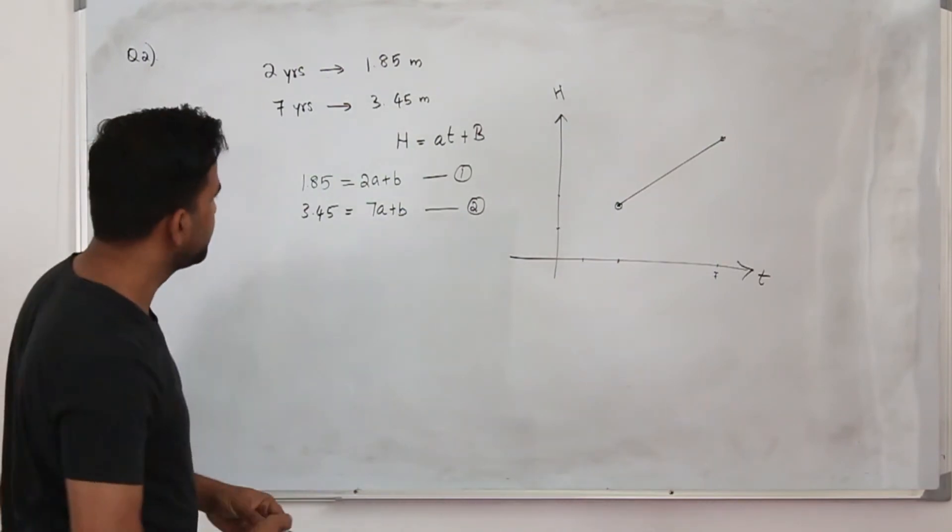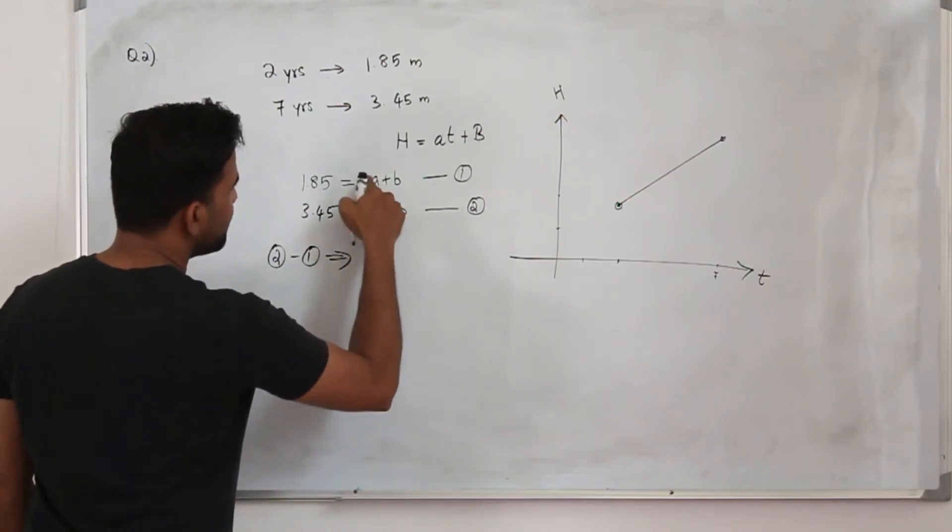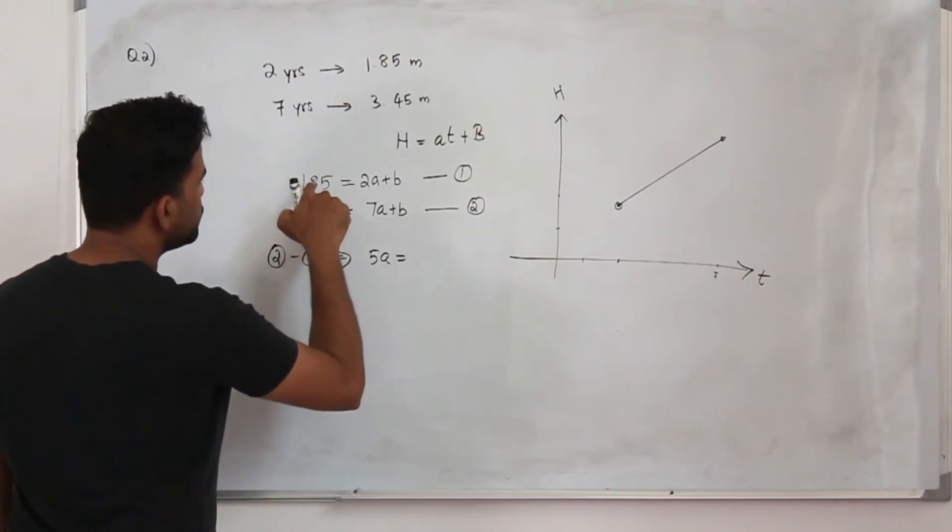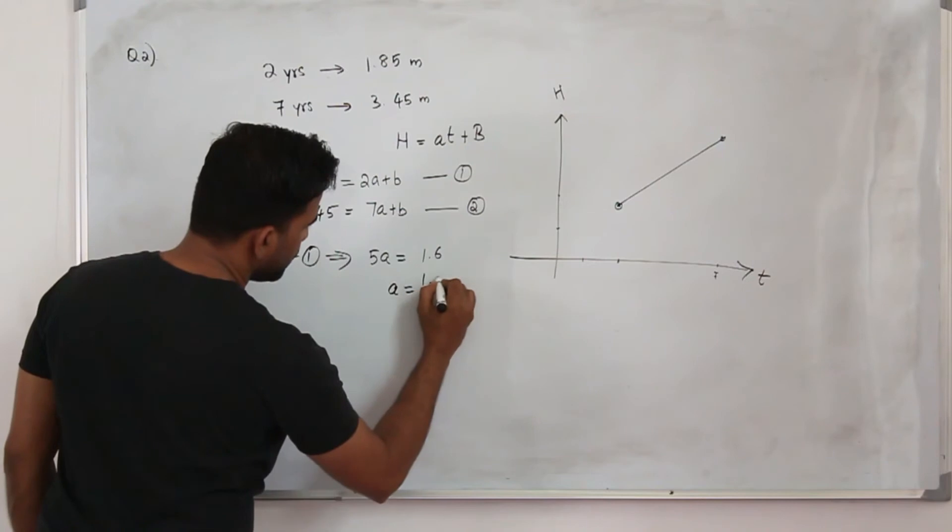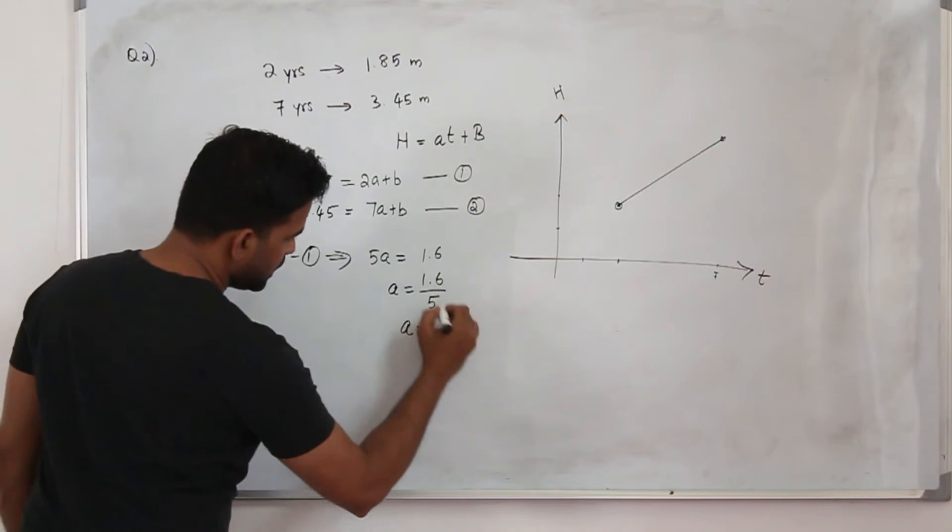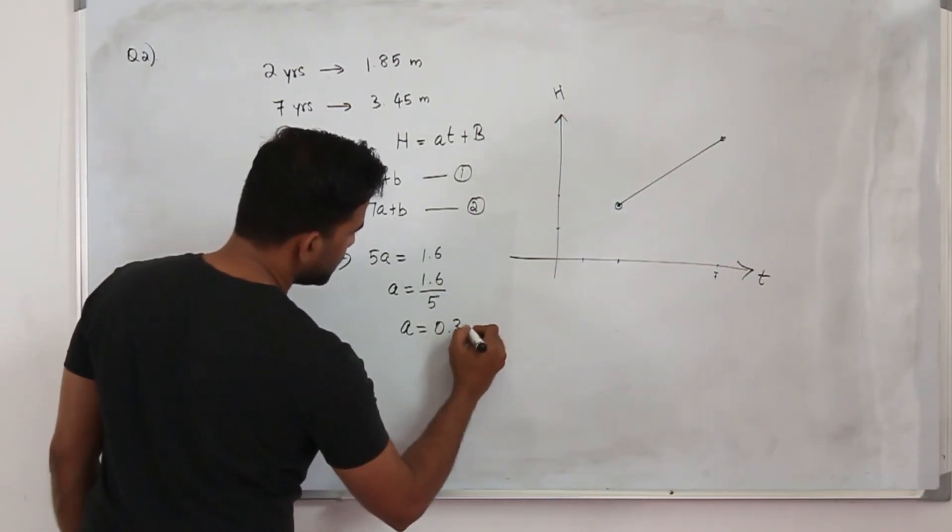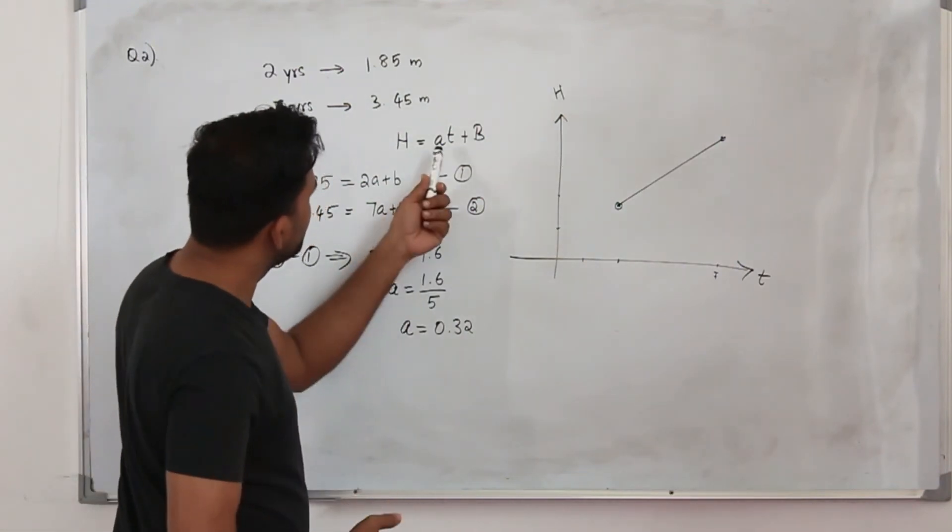Equation 2 minus 1 will give you, your b will be cancelled, 7a minus 2a is 5a. 3.45 minus 1.85, which will be 1.6. So your a will be 1.6 by 5, a will be 0.32. 0.32 is the value of a, or in other words, the slope of the straight line.